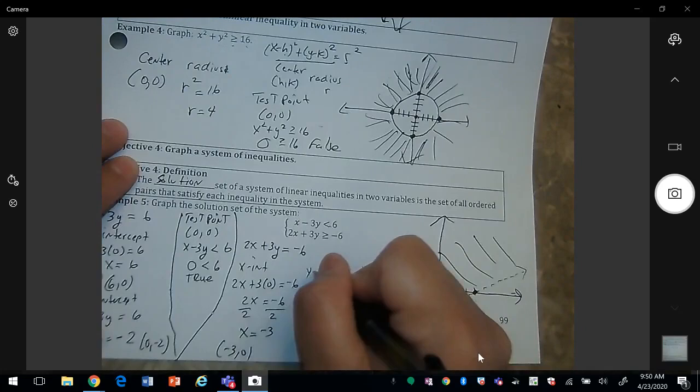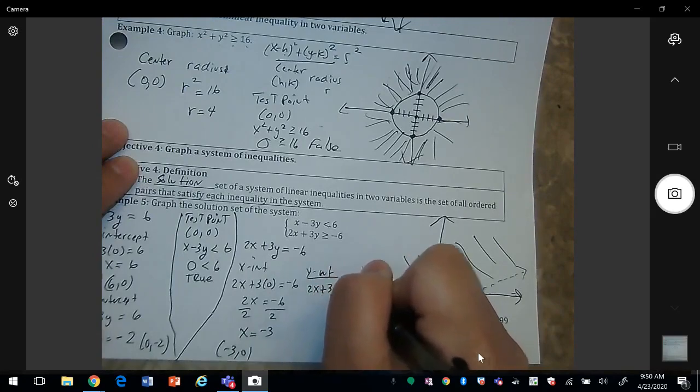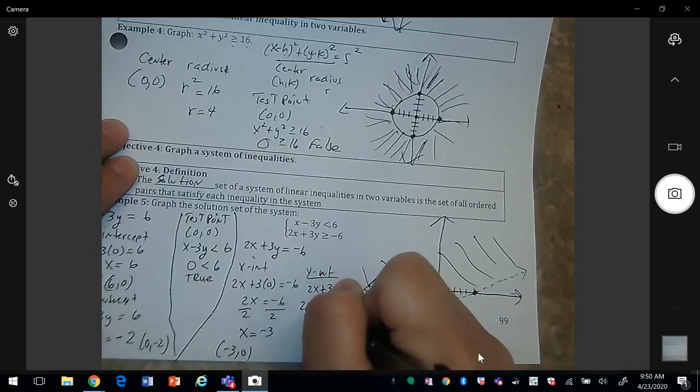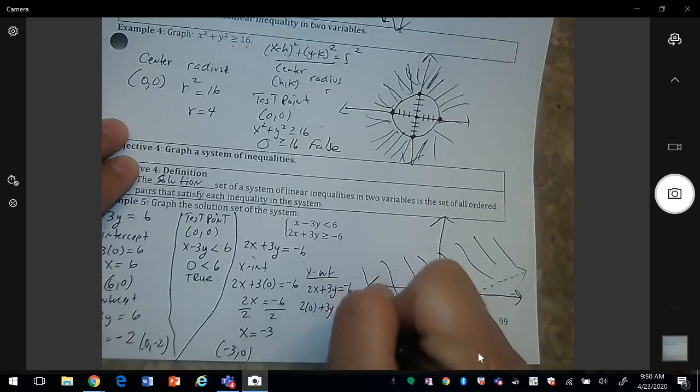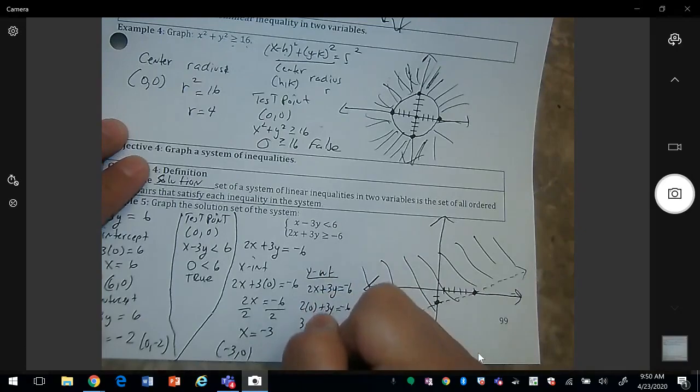And then I'm going to use the y-intercept. If x is 0, then here we get y is equal to negative 2.